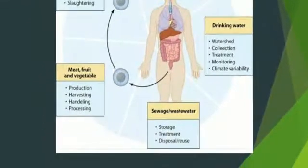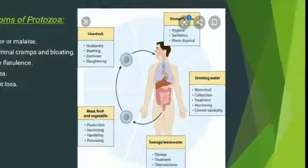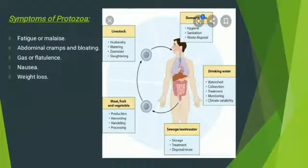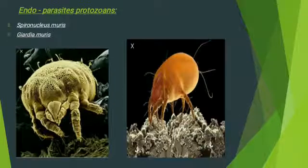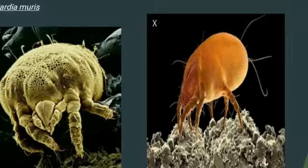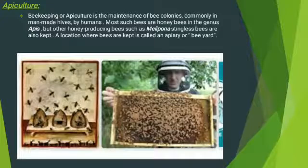Giardia lamblia affects humans through contaminated sewage, meat, fruits, vegetables, and livestock. There are two main endoparasitic protozoans present in the digestive tract: number one is Spironucleus muris, and number two is Giardia muris. Diagrams of these two main endoparasitic protozoans are shown here.